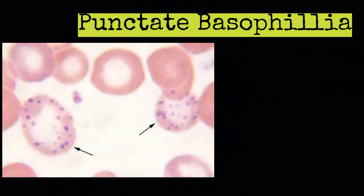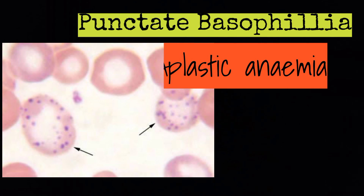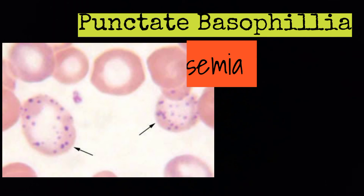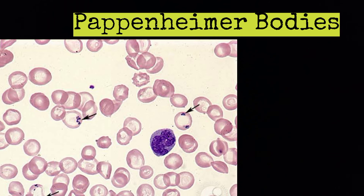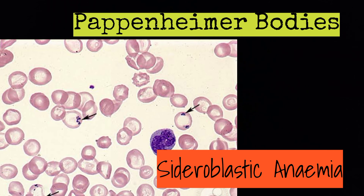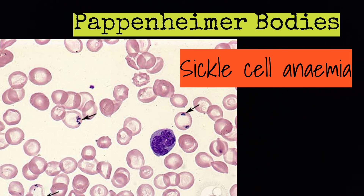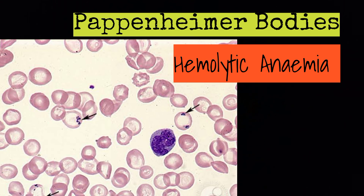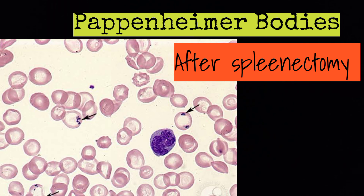Punctate basophilia, or basophilic stippling, is present in lead poisoning, aplastic anemia, thalassemia, and myelodysplasia. Pappenheimer bodies are present in sideroblastic anemia, sickle cell anemia, hemolytic anemias, and splenectomized patients.